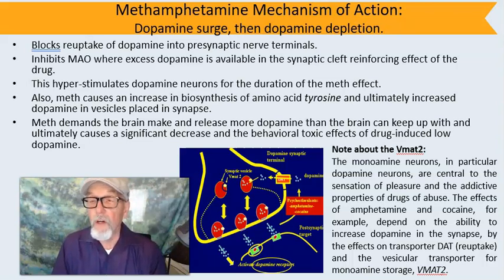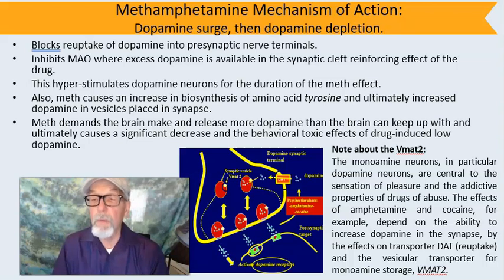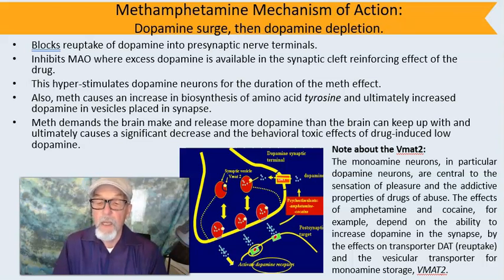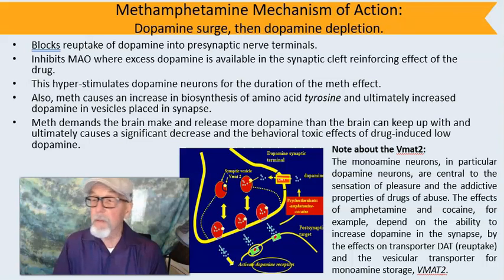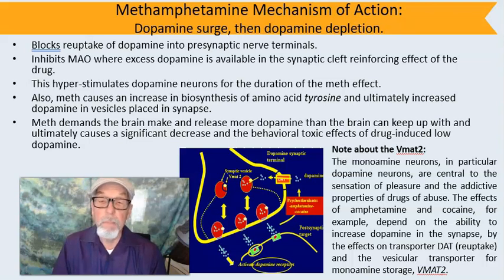Meth also causes an increase in the manufacturing or biosynthesis of new neurotransmitters by converting the amino acid tyrosine into dopamine, stores that newly made dopamine into synaptic vesicles, and sends them down the neuron's axons, placing the dopamine inside the synapse. The problem is that methamphetamine demands the brain make and release more dopamine than it has ever been built to keep up with, ultimately causing a significant decrease — a drug-induced low dopamine — with repeated methamphetamine use.